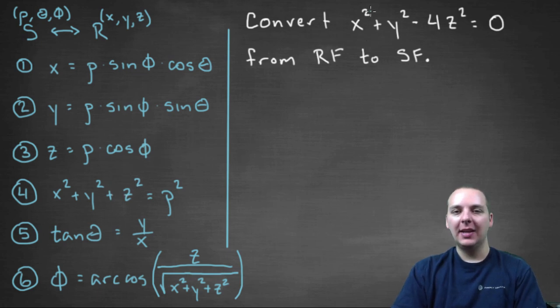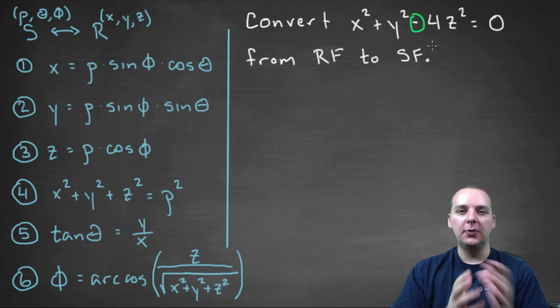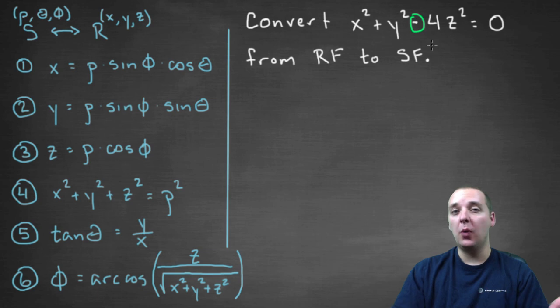One thing that catches my eye is this reminds me a lot of number four: x² + y² + z² = ρ². The only problem is that this is a minus 4z², not a plus. So it doesn't immediately work. So I have to think, how can I finagle this thing around? How can I shuffle some terms around to maybe get what I want?